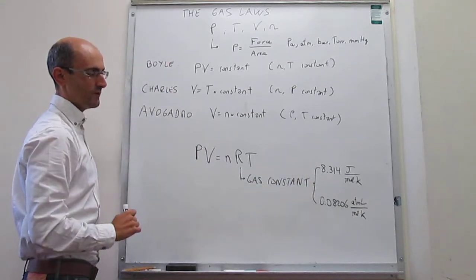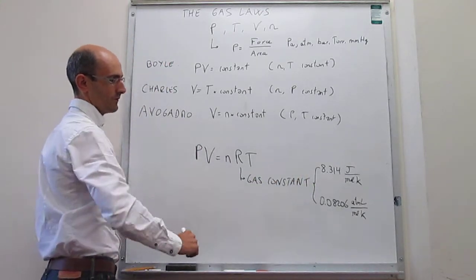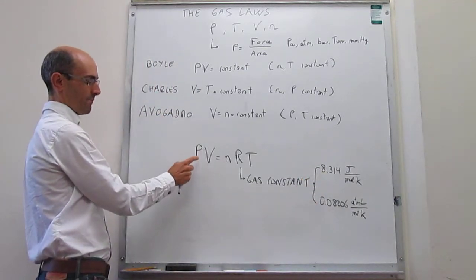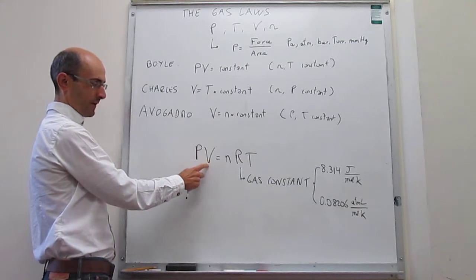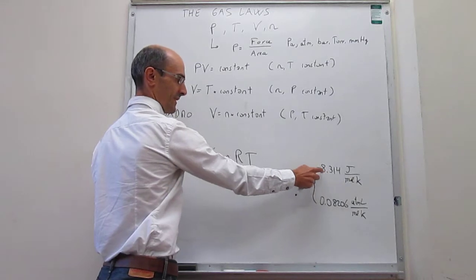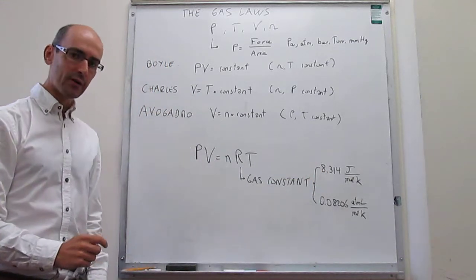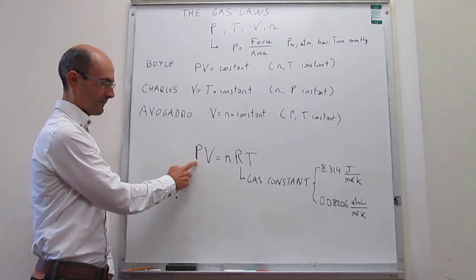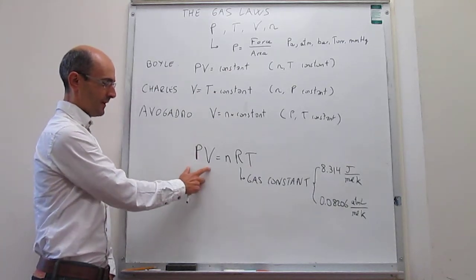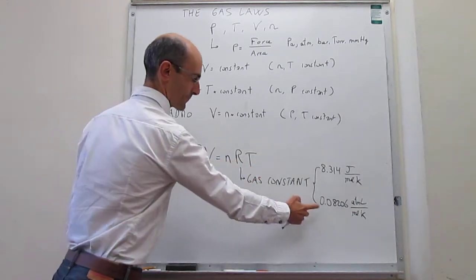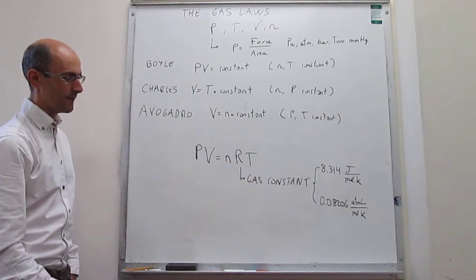If you're using SI units, which will require you to use Pascal for pressure, cubic meter for volume, moles, and temperature in Kelvin, then you will be using that one. Now, in general chemistry, we're rarely going to be using SI units. It's far more common to use atmospheres as a unit of pressure, liters as a unit of volume, moles, and then Kelvin. And that means that's the value of R that you need to use.